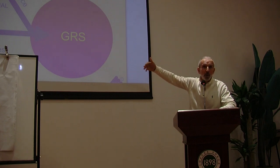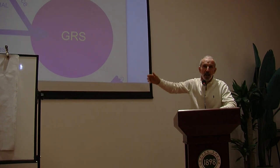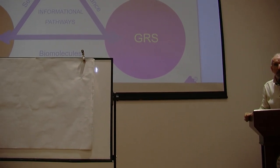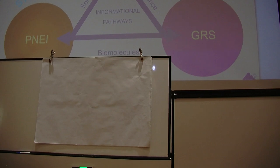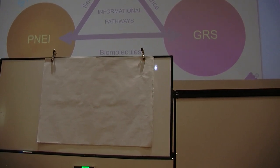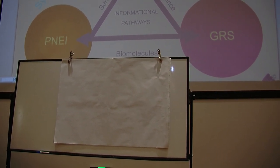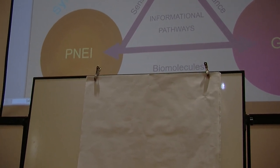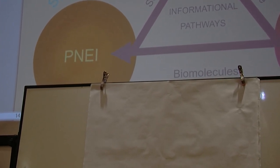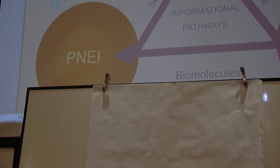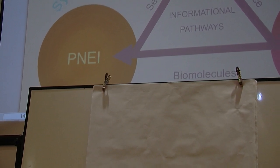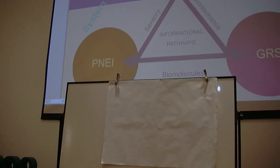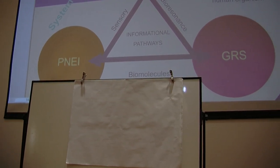And then we have what we call modern medicine, PNEI. P stands for psycho. N stands for neuro. E stands for endocrine. And I stands for immune. So all systems - that is your psyche, that means your humorous states, your humors, your feelings, your sensations.